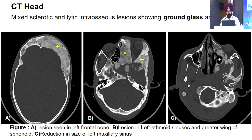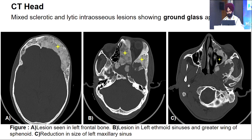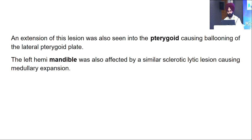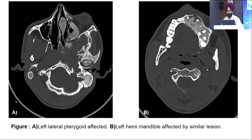CT head was ordered, showing mixed sclerotic and lytic intraosseous lesions with a ground glass appearance. In figure A, the lesion is visible in the left frontal bone. In figure B, the lesion is seen in the ethmoid air sinuses and the greater wing of sphenoid, affecting the medial and lateral orbital walls on the left side. In figure C, there is a reduction in the size of the maxillary sinus. The lesion was also extending into the pterygoid, causing ballooning of the pterygoid plate on the left side.